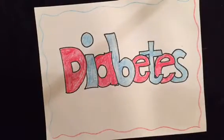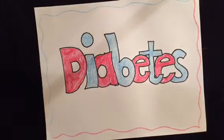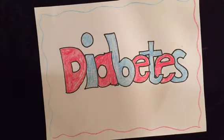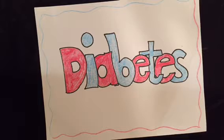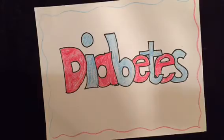Diabetes is a disease that affects the lives of millions of Canadians. In this video we'll go over what diabetes is, what organs it affects and how it affects them, how it is diagnosed, detected and caused, a nanotechnology that may be used to treat the disease, some treatments and ways to prevent it, and the lifestyle changes to improve the quality of life.